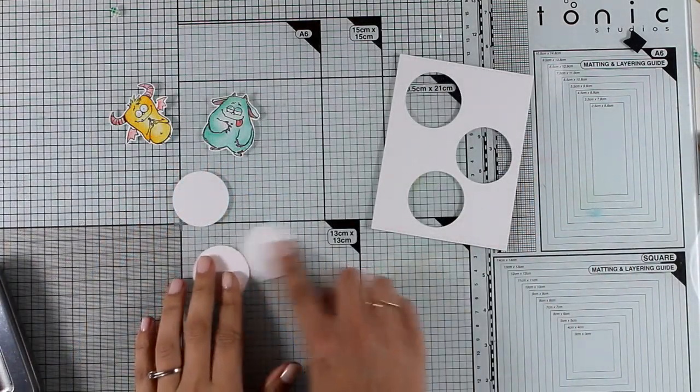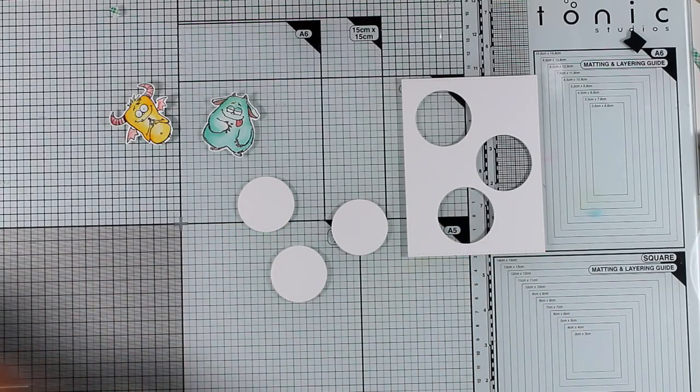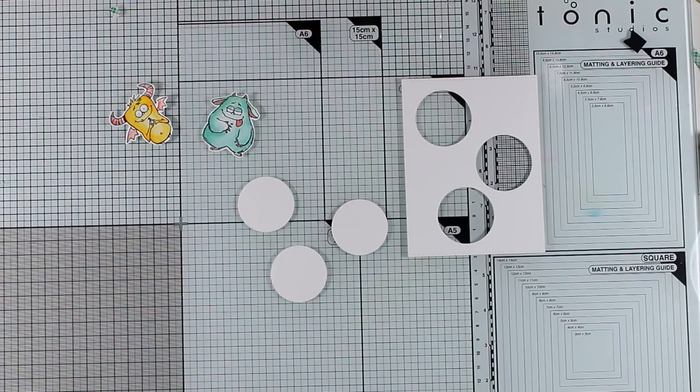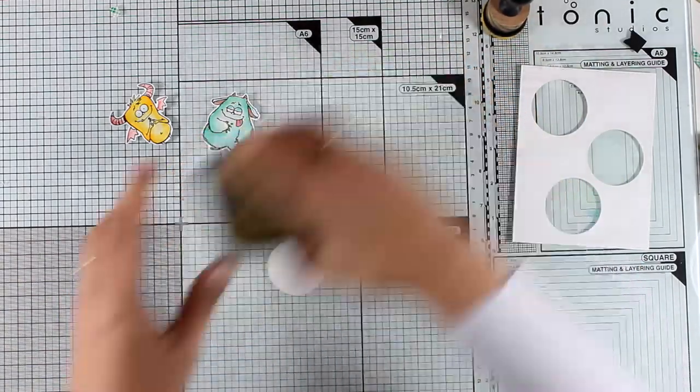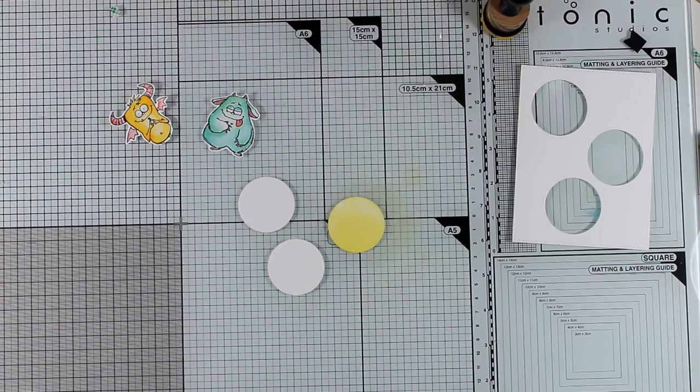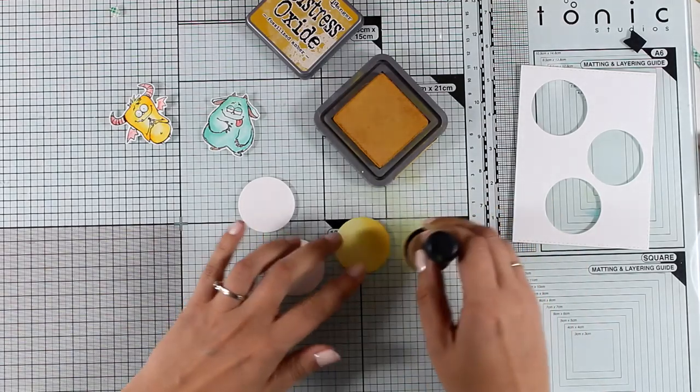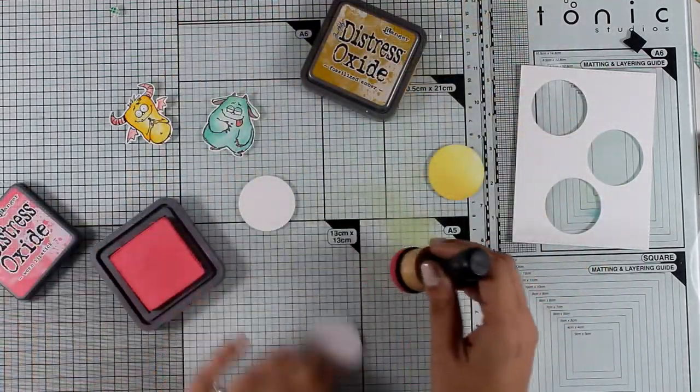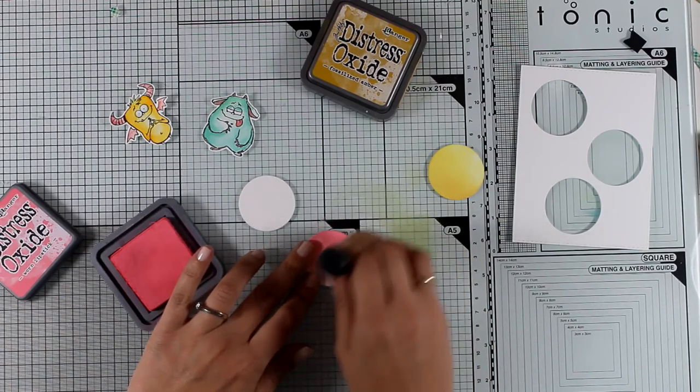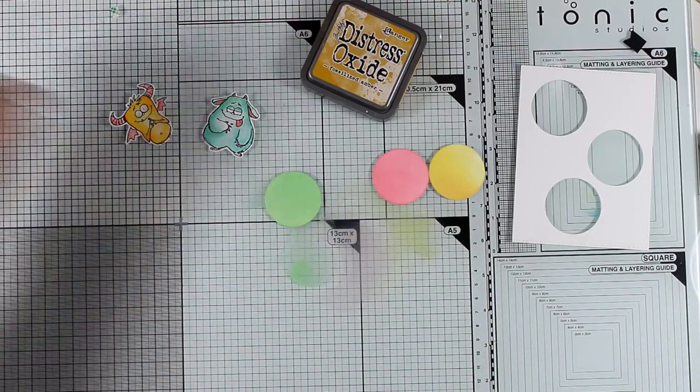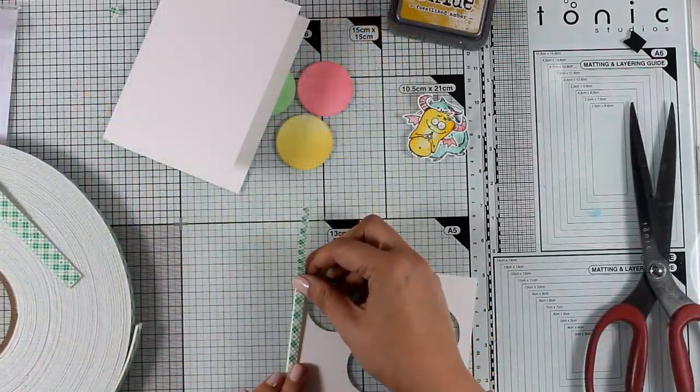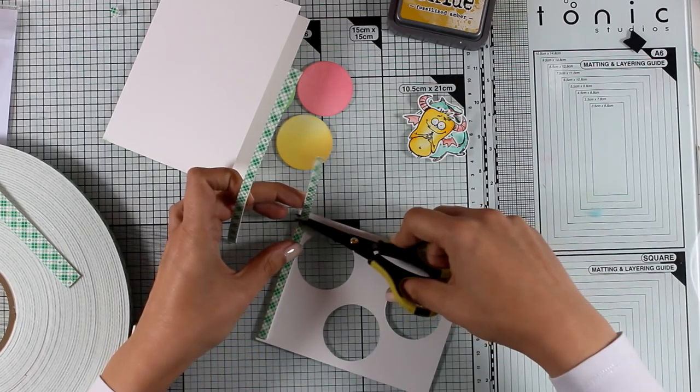So after coloring everything with my Aquaflow markers just like I did for the first card, I cut out this panel by using one circle die to cut out three different windows. For my card I'm going to use both the frame that I have created as well as the little circles, so nothing goes to waste here. I'm going to color all those three circles with my distress oxide inks and I'm going to use yellows, I'm going to use Worn Lipstick for the second circle and Cracked Pistachio for the last circle, so I pretty much match the color palette of my monsters.